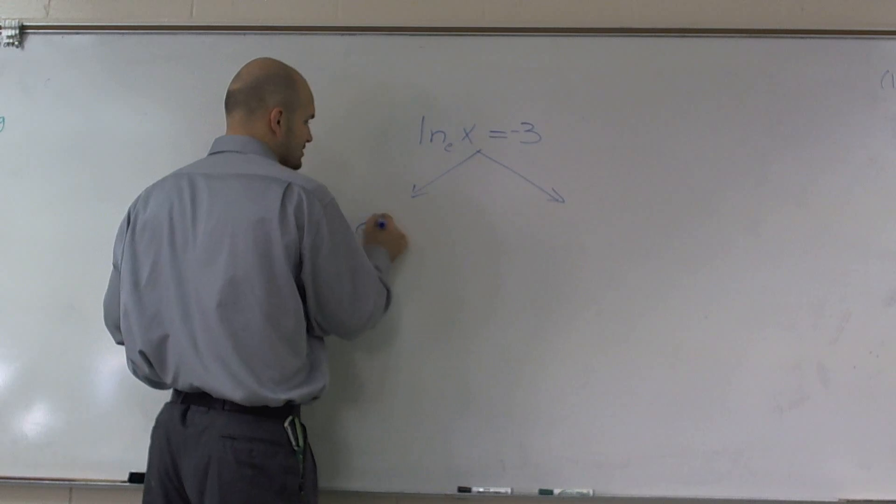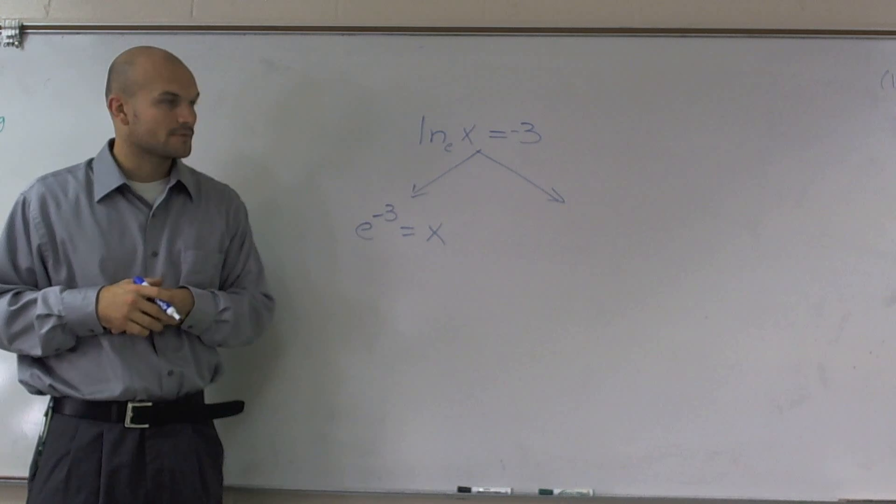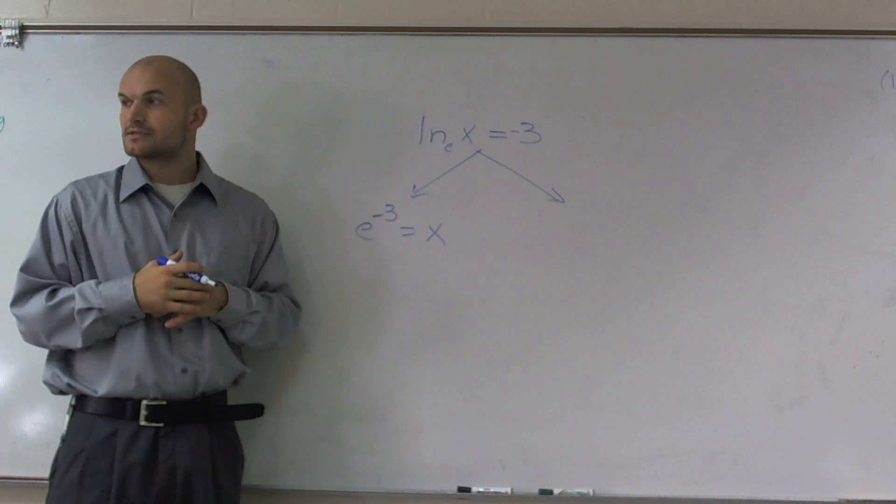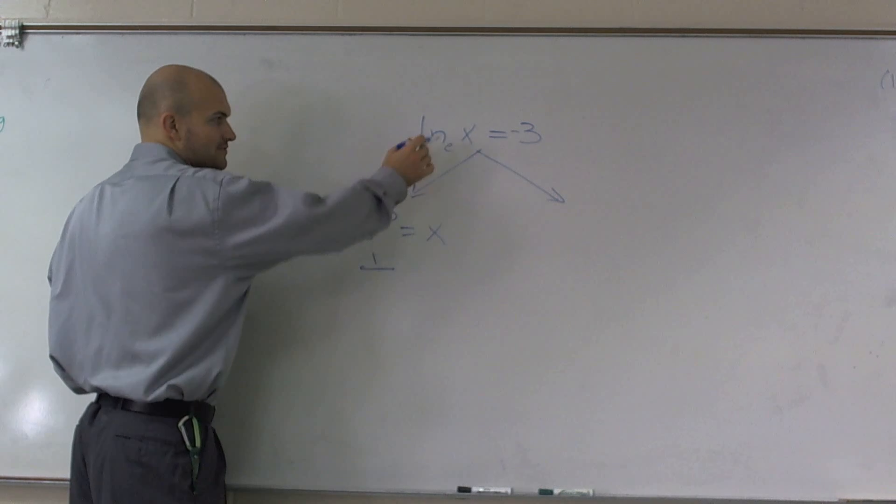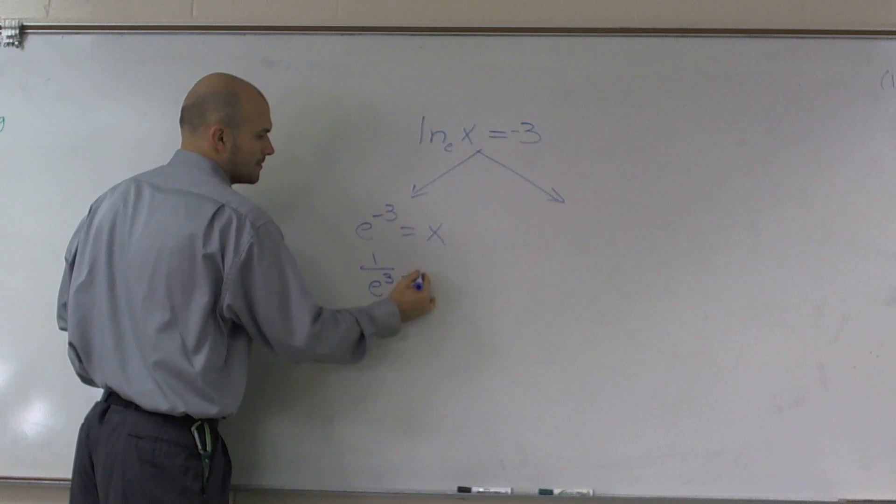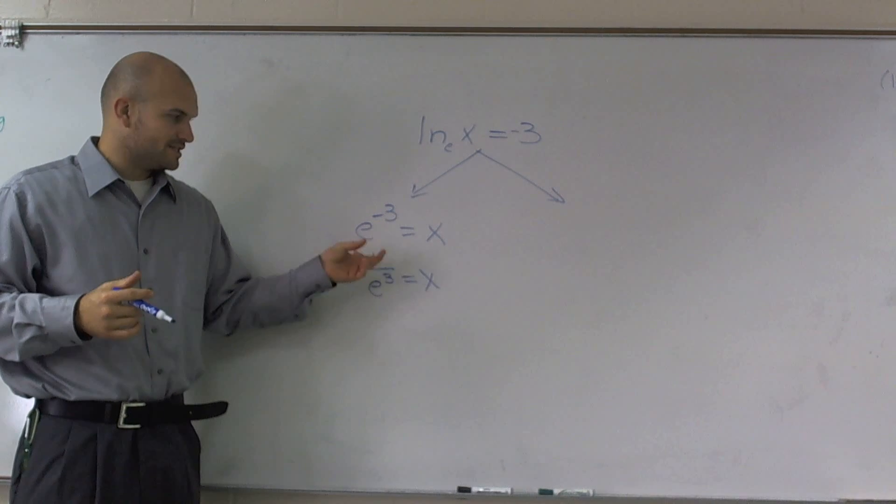So you'd have e to the negative 3rd equals x. e to the negative 3rd equals x. So you're pretty much just canceling? No, I'm transferring from logarithmic to exponential form. So therefore, then in your calculator, you can rewrite it as 1 over e to the 3rd equals x.